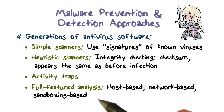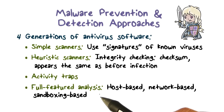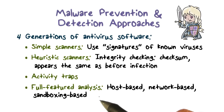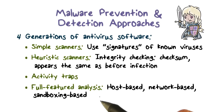Similarly, if there's a connection to a website well known for malware download, that's also a telltale sign that the end host has been infected and the malware is attempting to download an update. Full feature analysis can also include a sandboxing-based analysis approach. A sandbox is typically used to run a piece of executable, for example an attachment from an email.